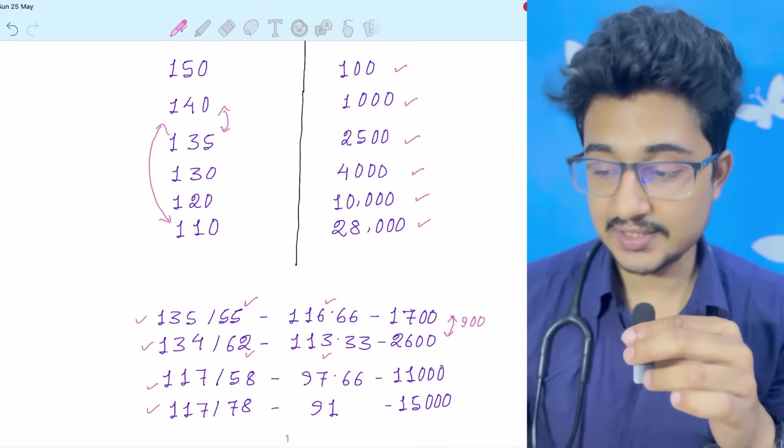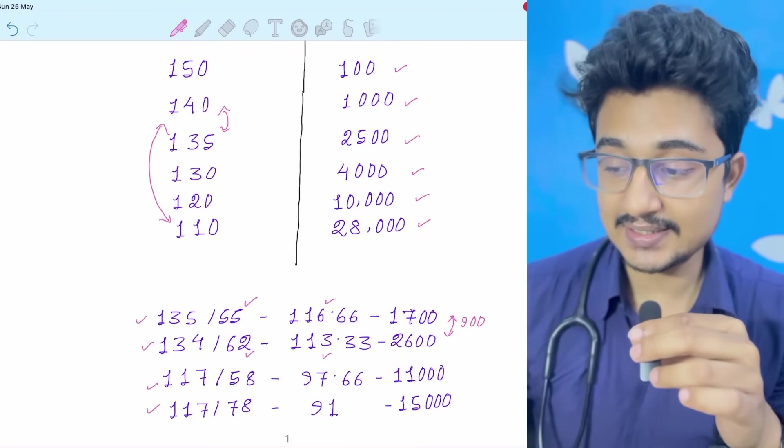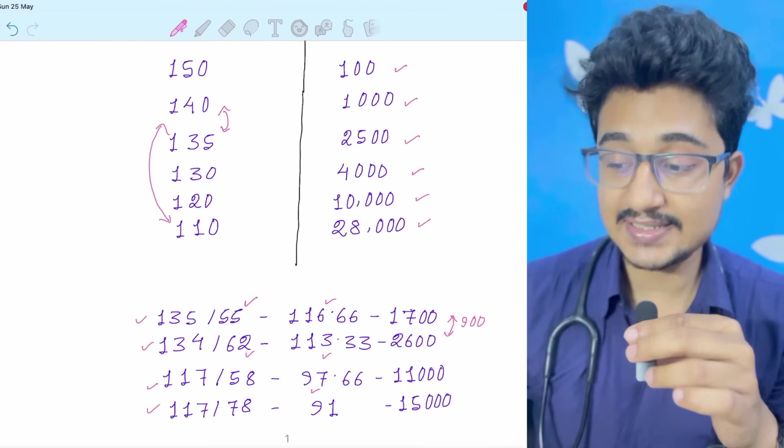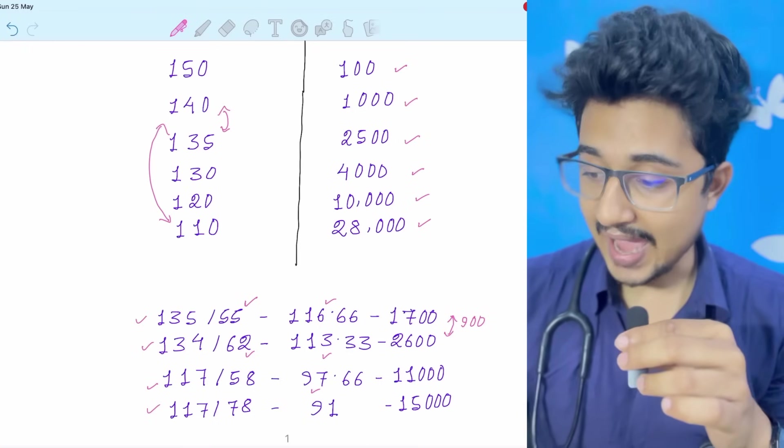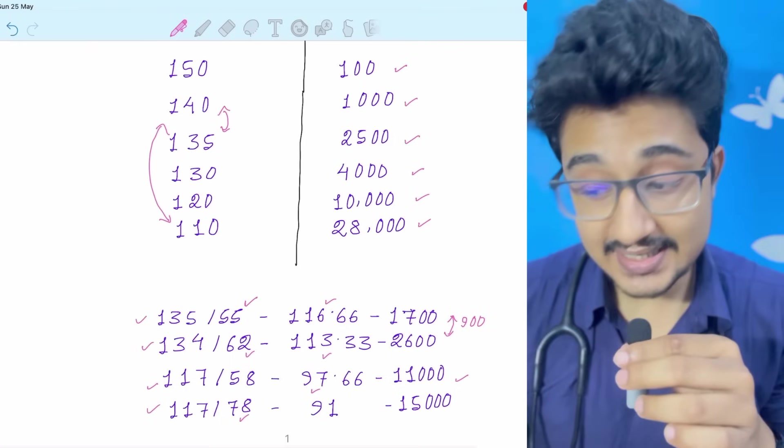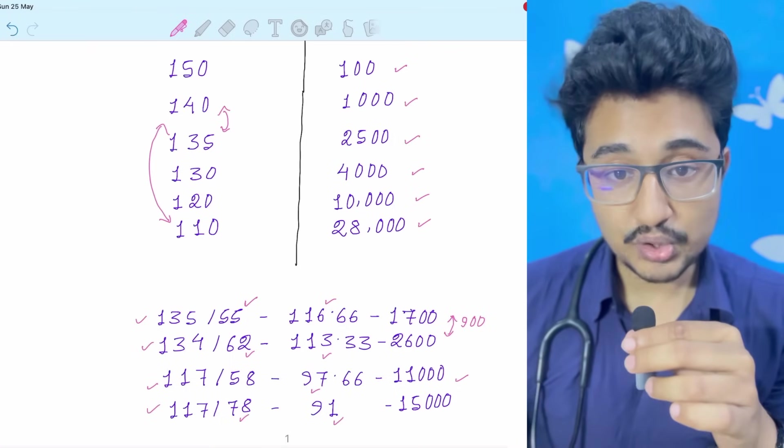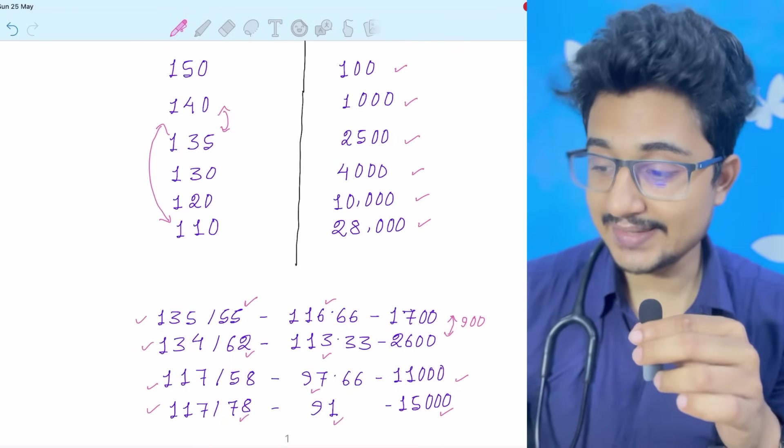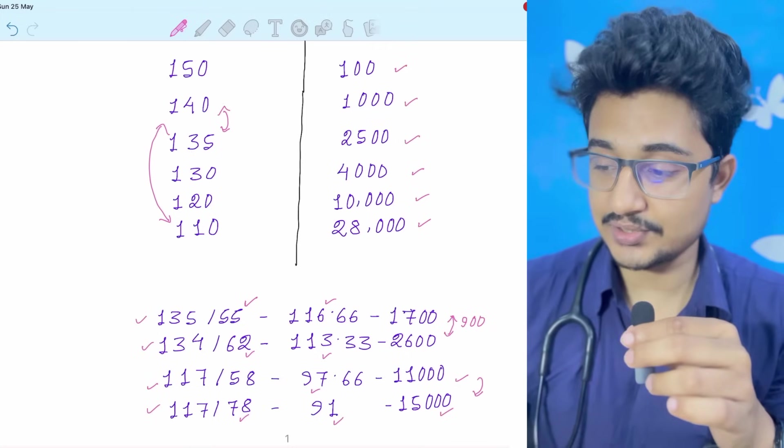So in 117 corrects with 58 incorrects, the score is 97.66 and the rank is 11,000. But with 78 incorrects, the score is 91 and the rank is 15,000.